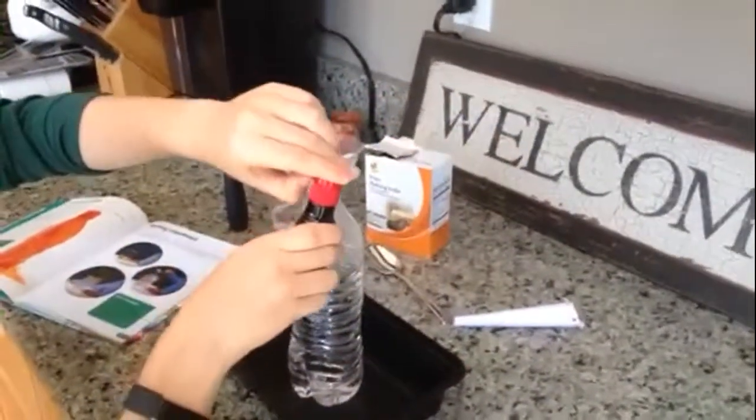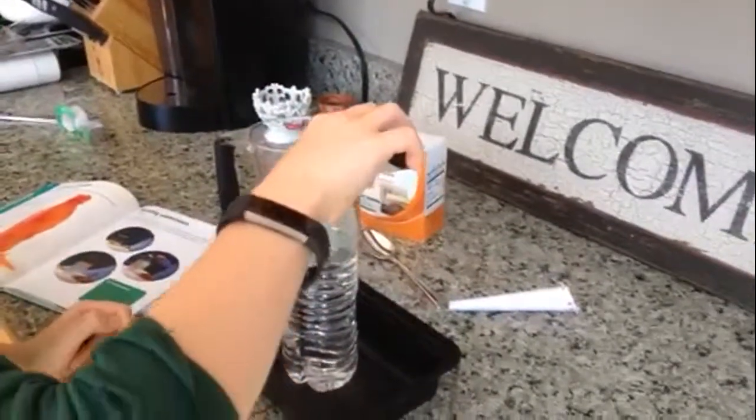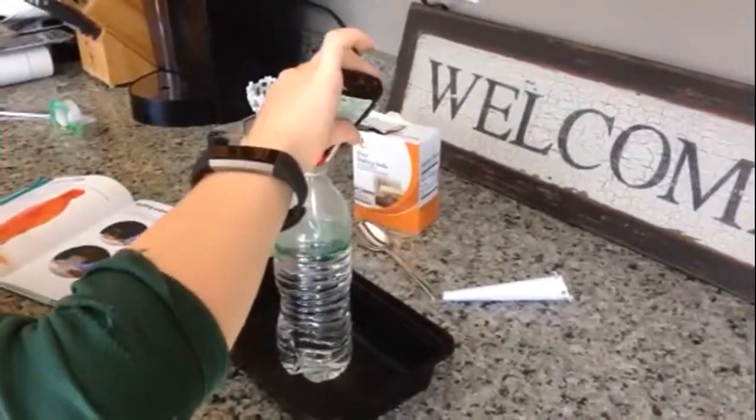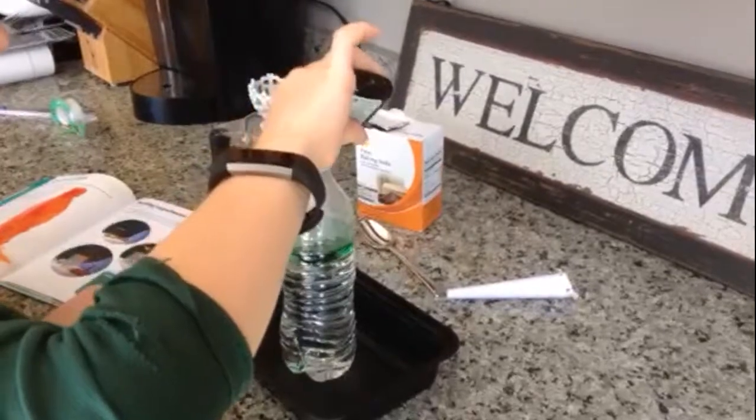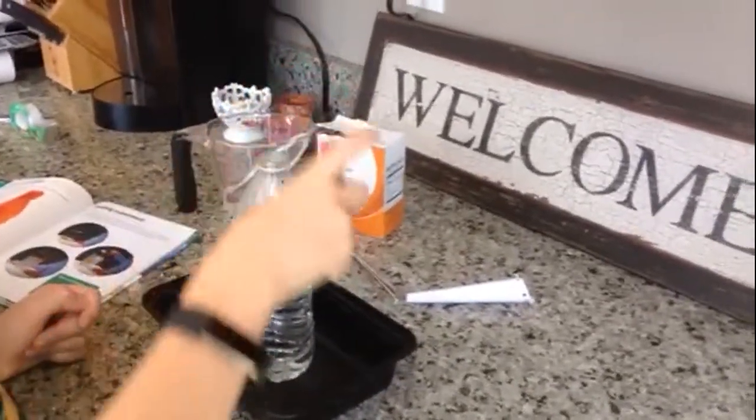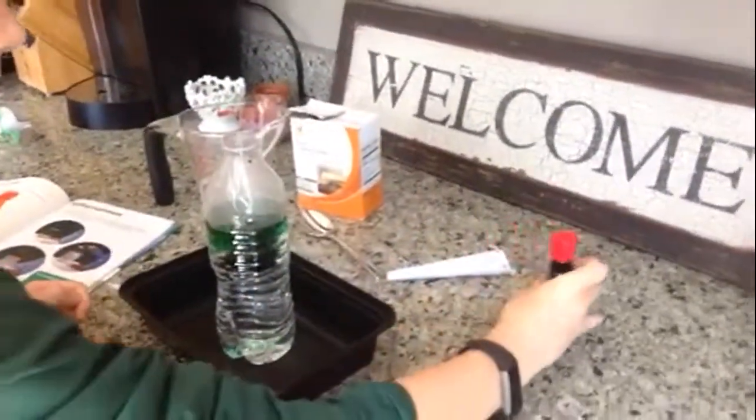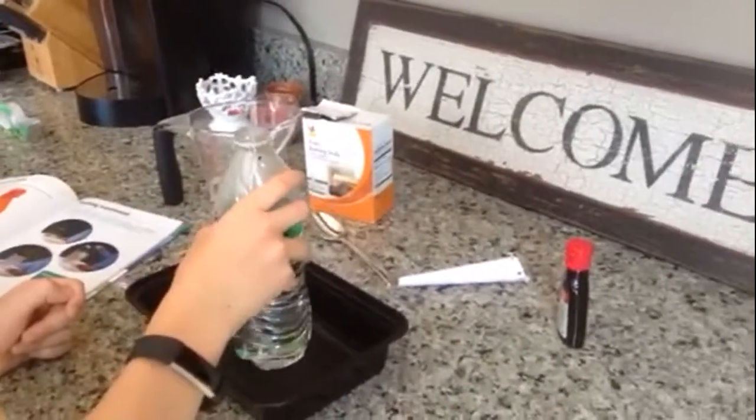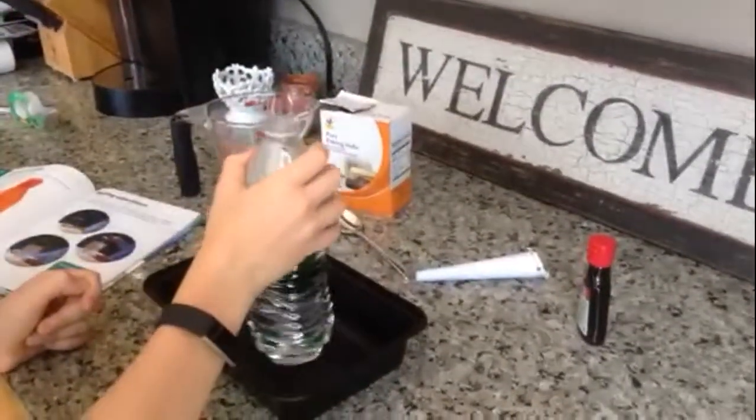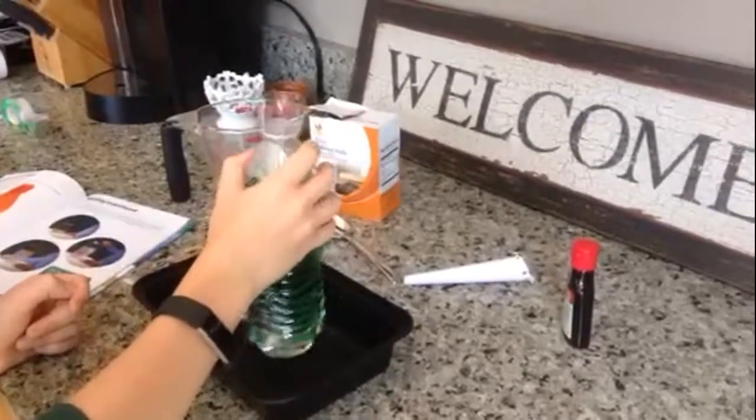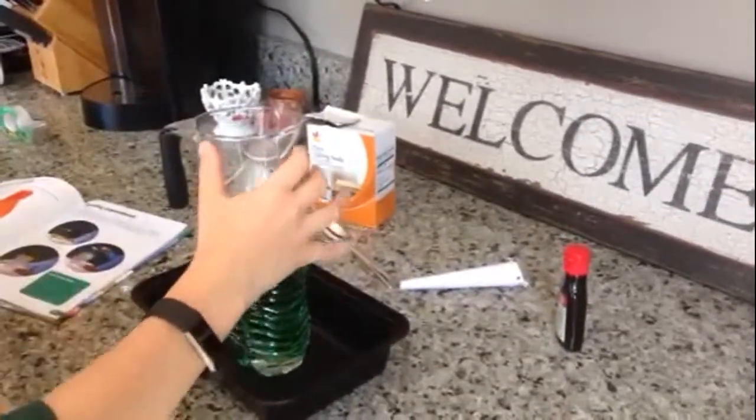And then we're going to add food coloring. This is totally optional. You can use red. We don't have any, so we're adding green. I'm going to add four drops in. Make sure it doesn't spill because it could stain your hands. So you're going to want to shake that around.